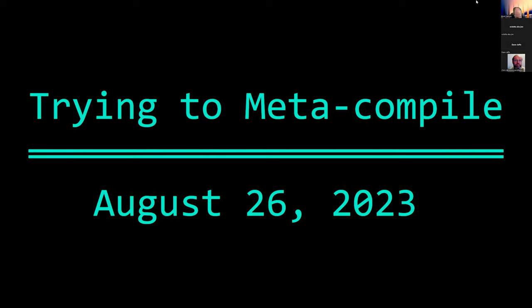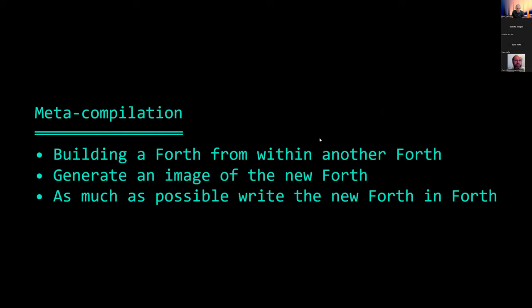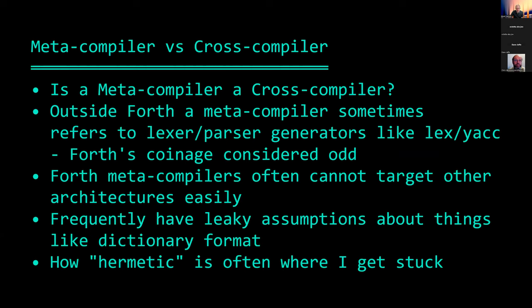Meta-compilation is the idea of building a Forth from within another Forth — you generate an image of the new Forth, and as much as possible you're trying to write the new Forth in Forth. In other contexts this is sometimes called cross-compilation, and there is an interesting question of whether a meta-compiler in the Forth sense is a cross-compiler. Outside the Forth community, the term 'meta-compiler' sometimes refers to things like lexers or parser generators, and the Forth usage of the term is considered a little bit peculiar.